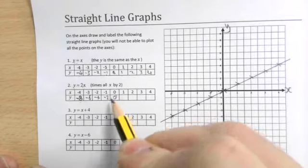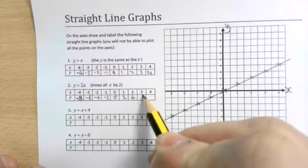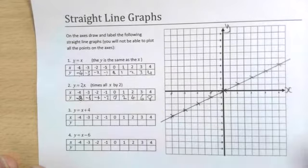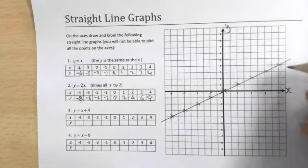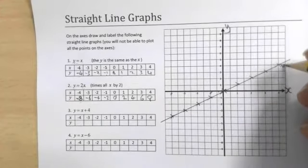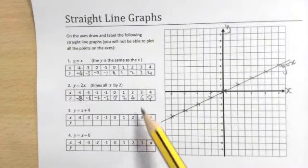So double that. Double nothing is still nothing. Two lots of one, two lots of two, two lots of three, two lots of four. Cool. And that's a different graph to plot. So because I'm going to plot on the same graph, it should have been a good idea to label this one. This one was the graph y equals x. It's a good habit to get into, so I won't get confused.